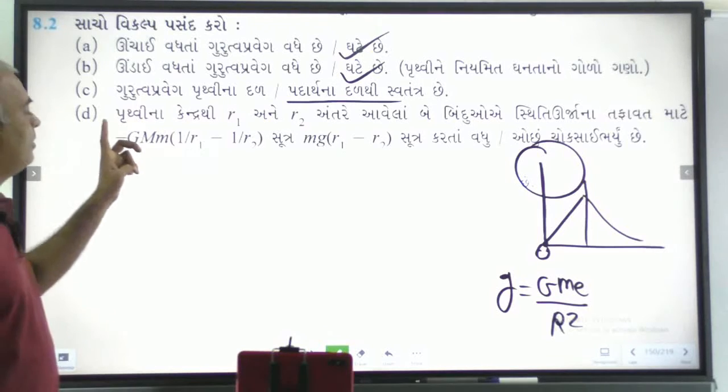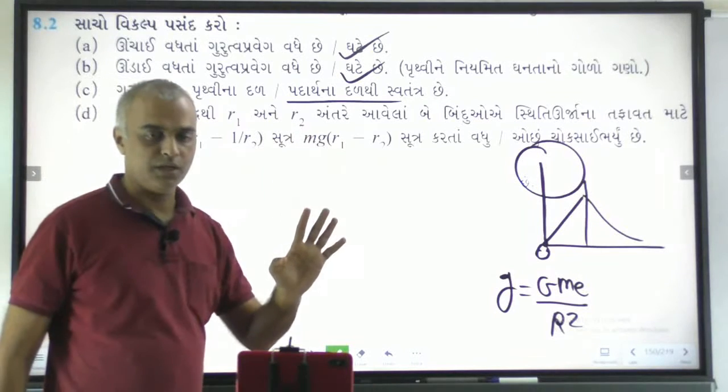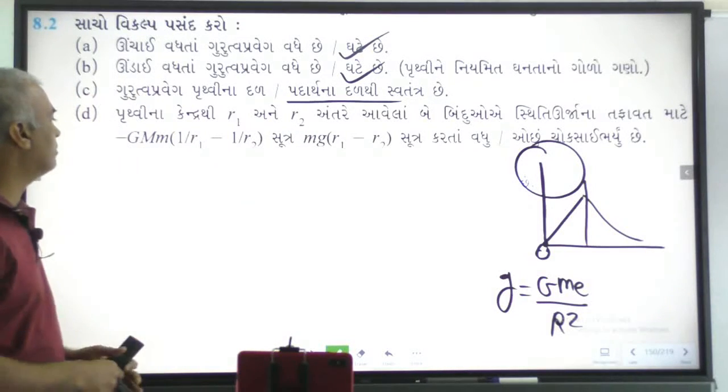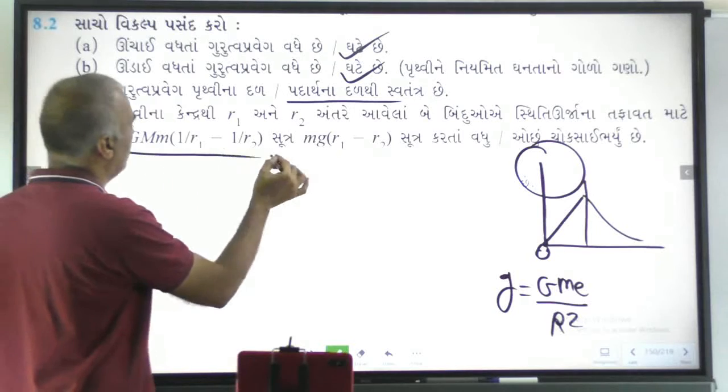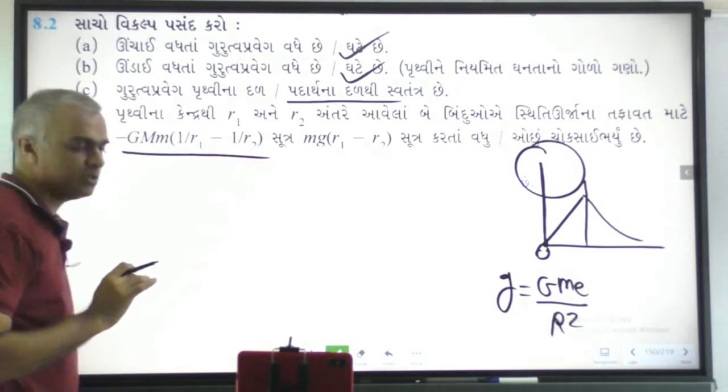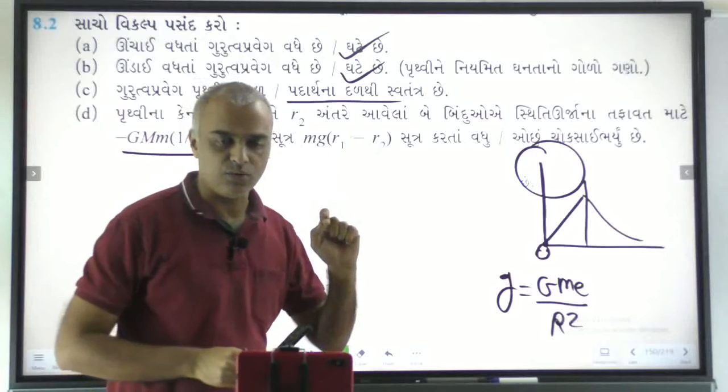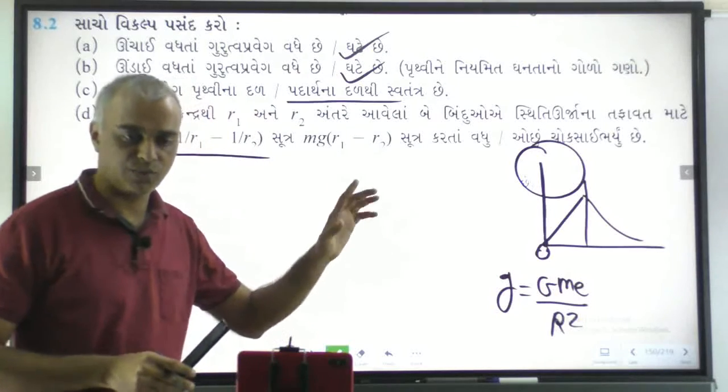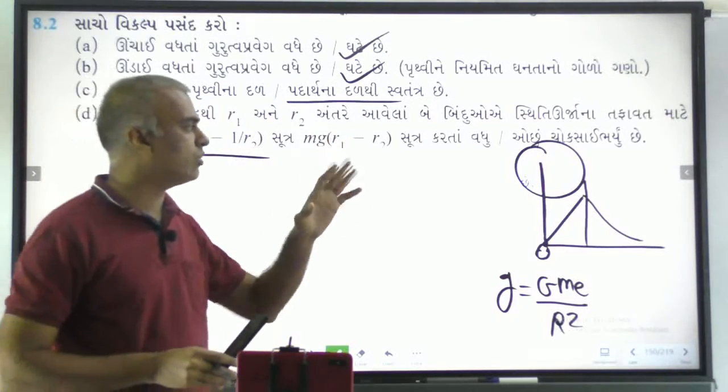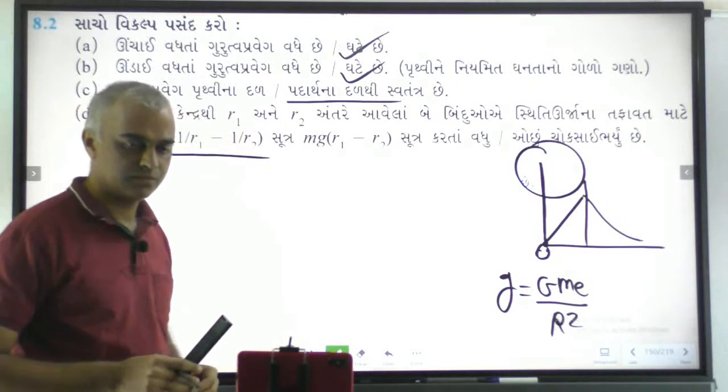Next question. PRUTVINA KENDRA, R1 and R2. The SITI URJANAT, the SUTRA: G*M*m upon R1 minus one upon R2. And the other question: Mg R1 minus R2, Mg H2 minus H1, or H1 minus H2. Who is the SVA TANTRA?